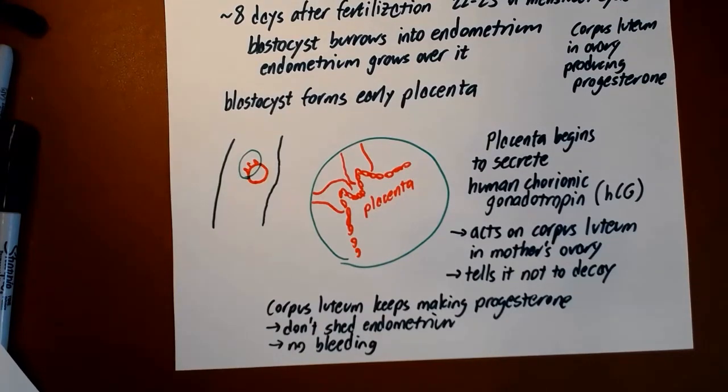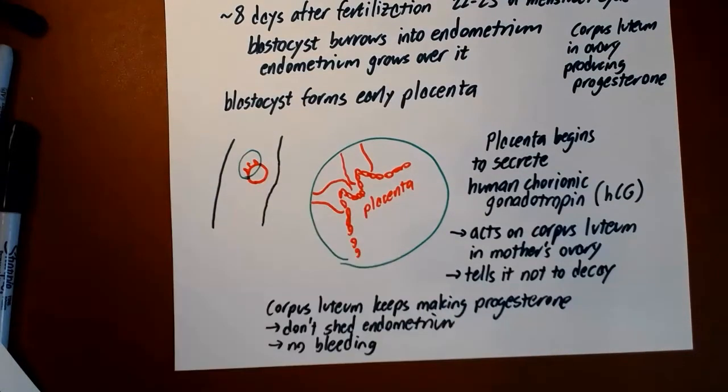Once we've implanted and had successful implantation and convinced the mother's body not to shed the uterine lining, this blastocyst can continue to grow and become an embryo and then a fetus, and then eventually a human baby that can be delivered during labor and delivery, which we are not going to get into right now. Our final topic is, we've talked about how fertilization and pregnancy can begin. Now we're going to talk about methods of contraception. In other words, how do people avoid having pregnancy begin?